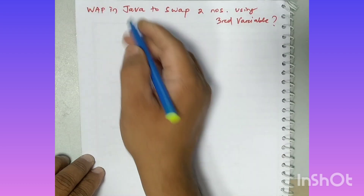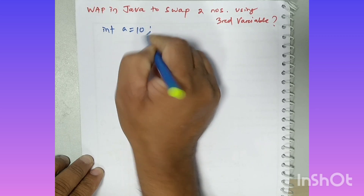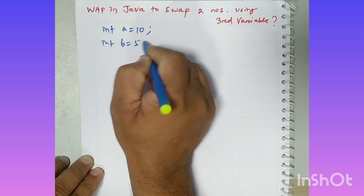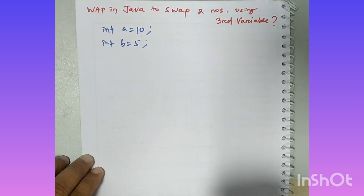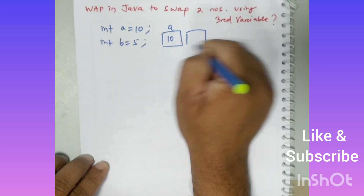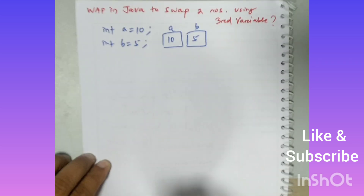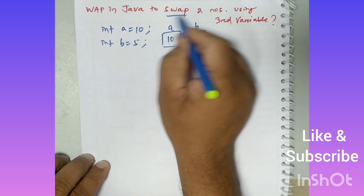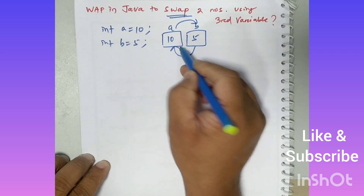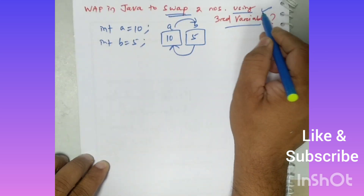How can I do this? Let's suppose int a is equal to 10 and int b is equal to 5. So here a value is 10 and b value is 5. What you have to do is swap — swap means interchange — this value will go to here and this value will go to here, by using a third variable.